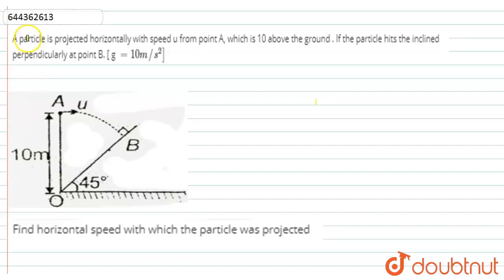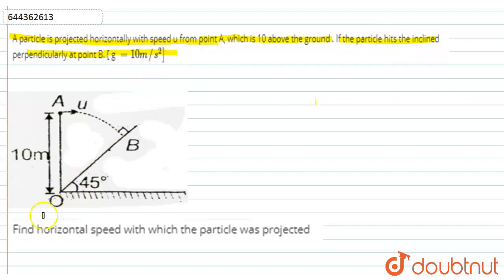In this question it is given that a particle is projected horizontally with speed u from point A, which is 10 meters above the ground. If the particle hits the inclined plane perpendicularly at point B, and g is equal to 10 meter per second squared, find the horizontal speed with which the particle was projected.